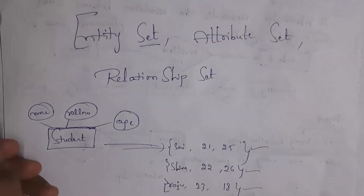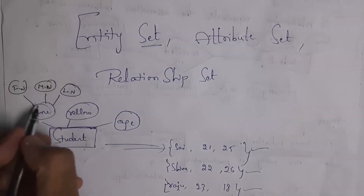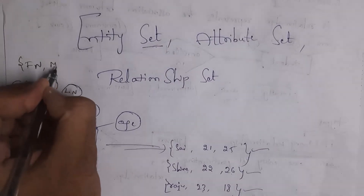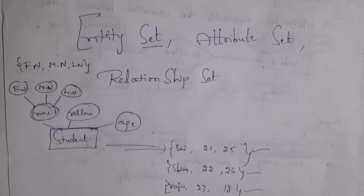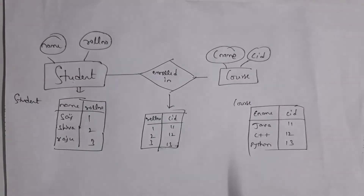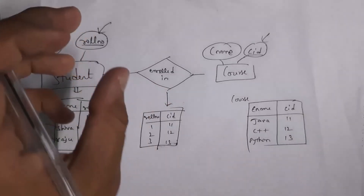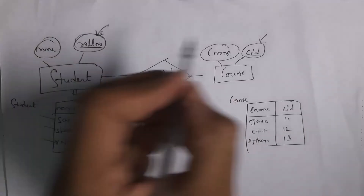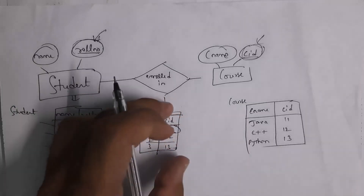Next is attribute set. For example, if you consider the name attribute and subdivide it into first name, middle name and last name, then this name attribute contains a set — first name, middle name and last name. So we call this as attribute set. Attribute set is nothing but a collection of attributes, also called a composite attribute. Next is relationship set. For example, there are two entity sets — student entity set and course entity set. I want to create a separate table for the 'enrolled in' relationship, so I select two keys: roll number and CID. This relationship table contains multiple relationships, so we call it a relationship set.